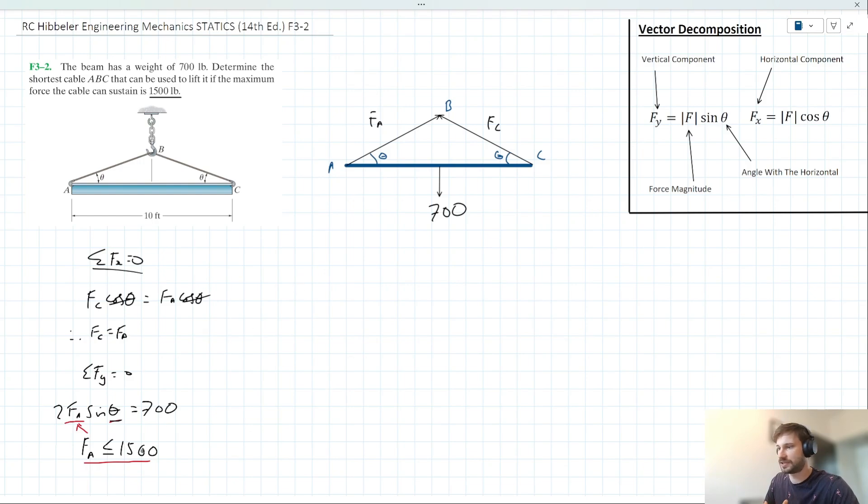So for starters, 2FA becomes 3,000. So I can say that sin theta, dividing by that 3,000 on both sides, we can say sin theta is equal to 700 over 3,000.